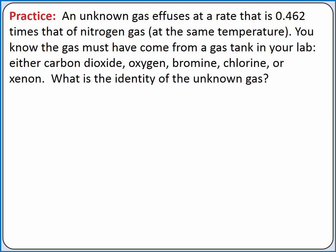Let's practice using Graham's law of effusion. Our problem reads, an unknown gas effuses at a rate that is 0.462 times that of nitrogen gas at the same temperature. You know the gas must have come from a gas tank in your lab, either carbon dioxide, oxygen, bromine, chlorine, or xenon. What is the identity of the unknown gas?